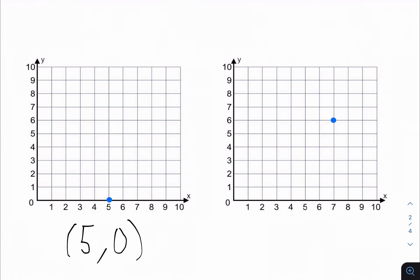So for the second one, we can see that the x-coordinate is 7. And then we move up to the point where the dot is. That would be 6. So that means the answer to this is (7, 6).